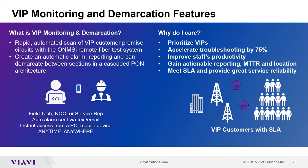PON architecture is cascaded, meaning we have a splitter followed by another splitter. We need to determine what section of the network a fault is in, and by doing that we can also typically determine how many customers are being affected.